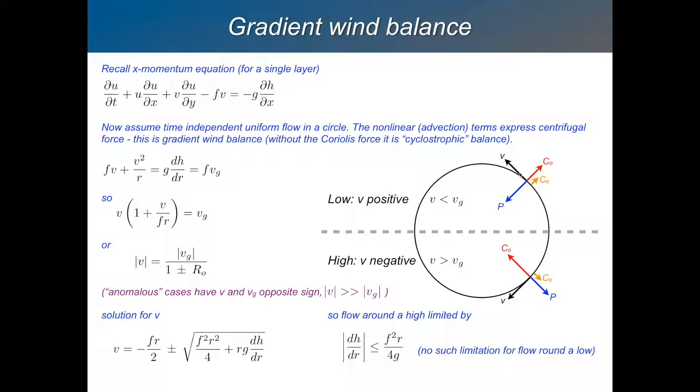Since we've got these two forces ganging up to compensate for the pressure gradient force and keep it flowing parallel to the isobars, that means that the Coriolis force does not need to be quite as strong as if it were in geostrophic balance. So, which means that the flow does not have to be quite so fast. So, V is a little bit weaker, a bit slower, than if it was in geostrophic balance. And so we can express that mathematically here.